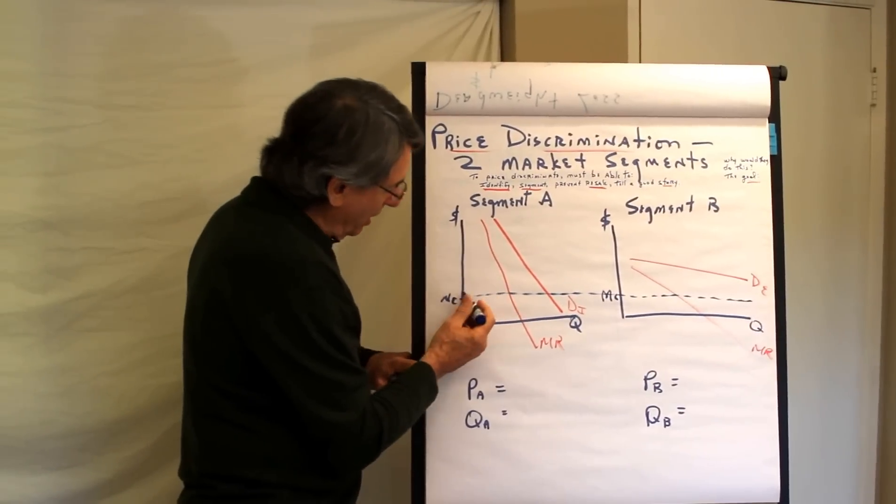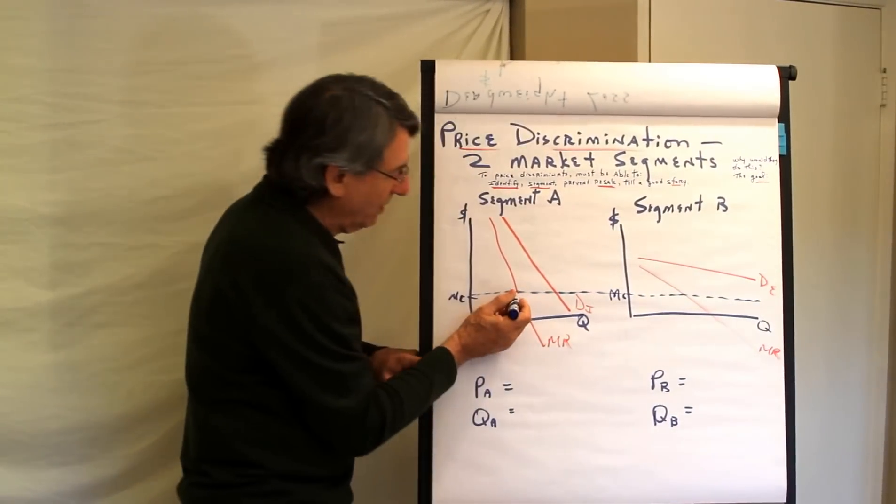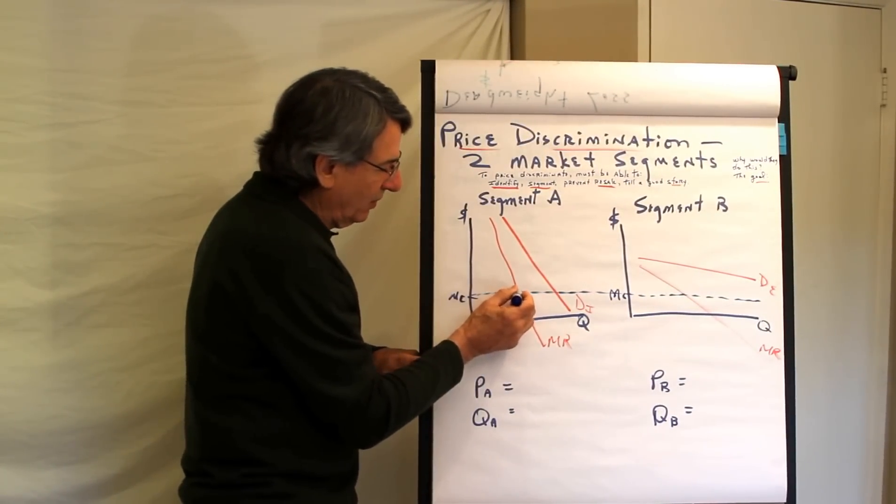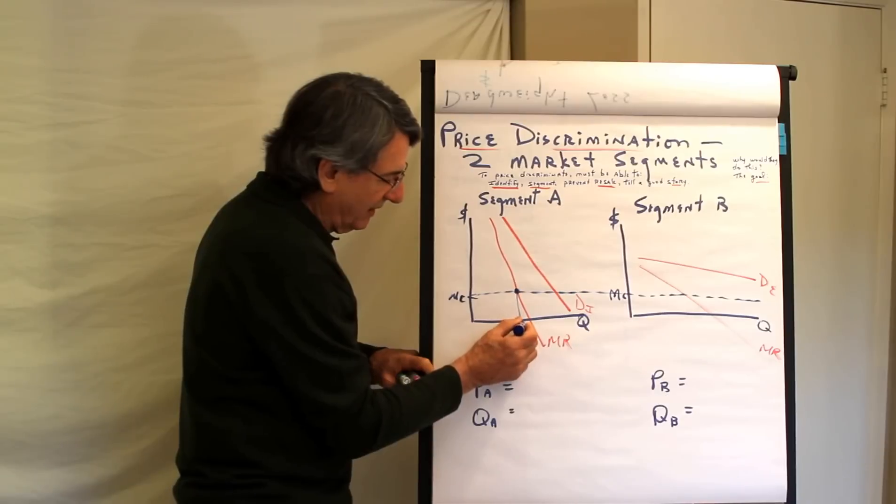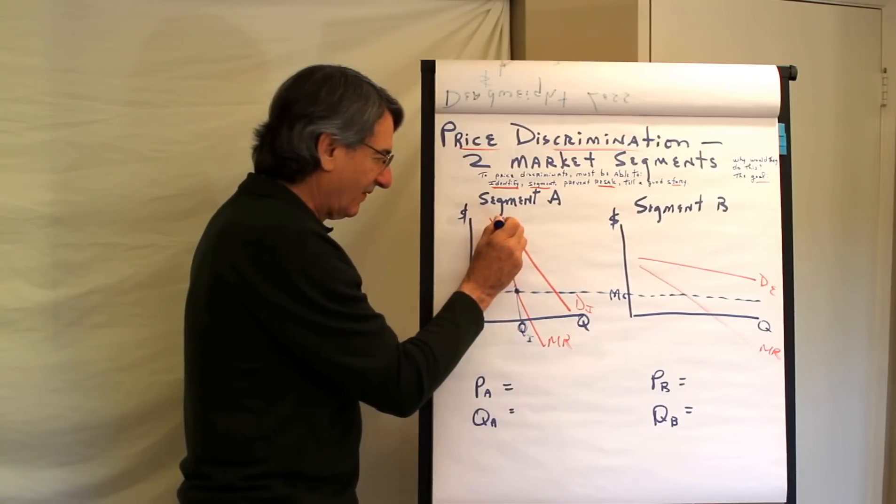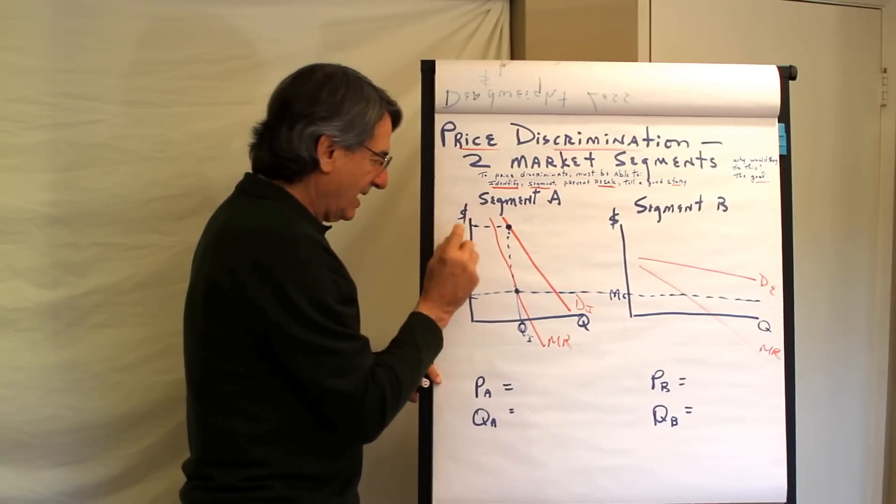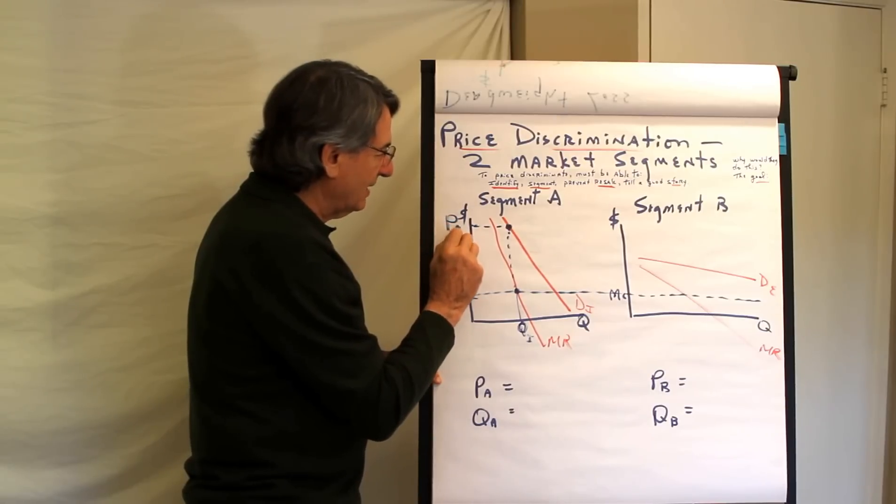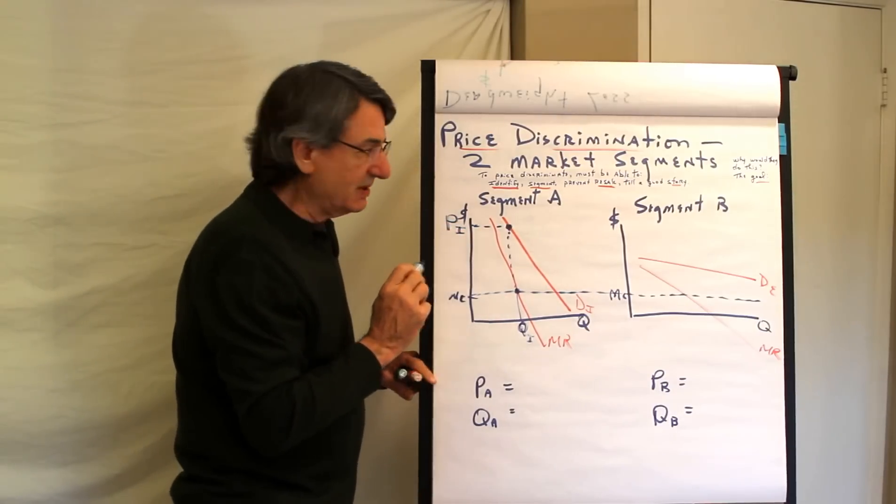And so, if the marginal cost is the same, then the airline would want to sell this quantity of tickets to the inelastic group. And what price will they charge? Ah, price comes from demand. So, this will be the price of the inelastic group, in this case business travelers.